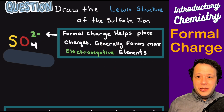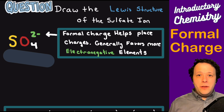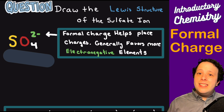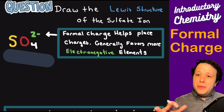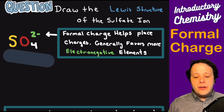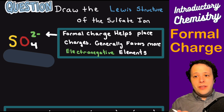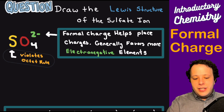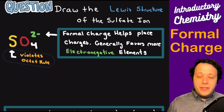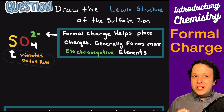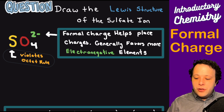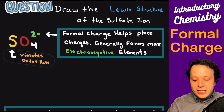Now let's draw the Lewis structure for the sulfate ion. This is one of the places where formal charges help you realize what the ionic charge is. Sulfate has an ionic charge of two minus — that is not the same thing as formal charge, but it allows you to see how charges are really distributed. The real charge favors electronegative elements — things up and to the right of the periodic table, close to fluorine. Sulfur is an octet rule violator, meaning it can expand by utilizing vacant d orbitals to allow more things to bond to it.